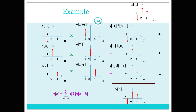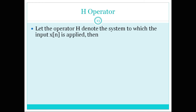Now let us go ahead with the convolution sum. I want to apply the H operator, which represents the LTI system to which input x of n is applied. So the output y of n equals H operated on x of n. Now I substitute the impulse-based representation of x of n: x of n equals sigma from k equals minus infinity to infinity of x of k times delta of n minus k. This gives y of n equals H of that entire summation.